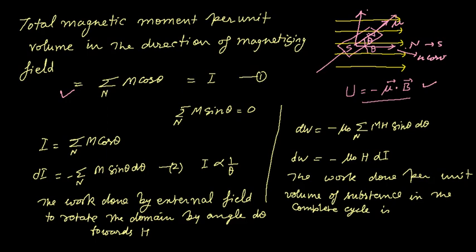The component of that along the field direction will be M cos θ. So I is equal to summation over N of M cos θ. If we differentiate it with respect to θ, dθ...